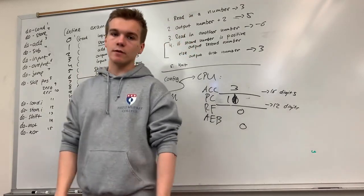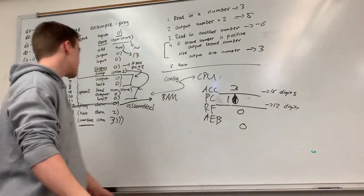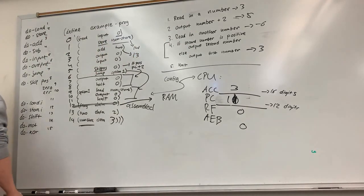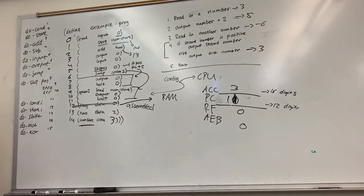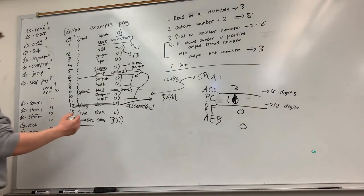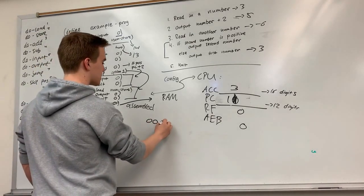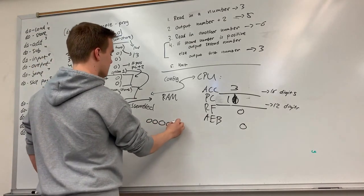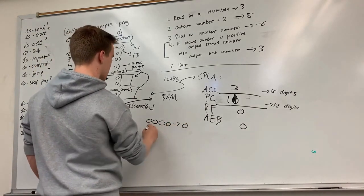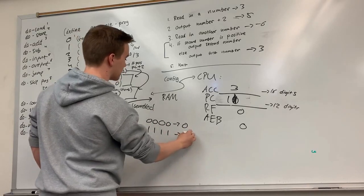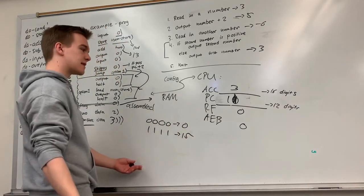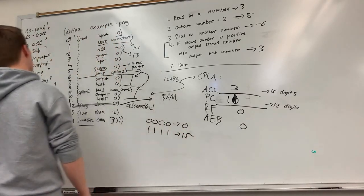If it's four binary bits, then we can represent 16 numbers that way — all the way from 0000, which is 0, to 1111, which is 15. That's a total of 16 codes.